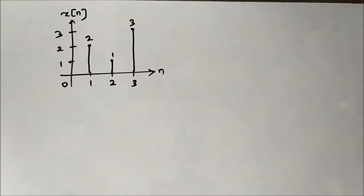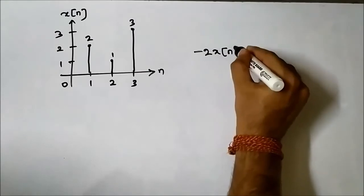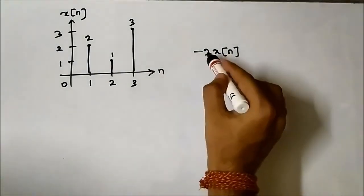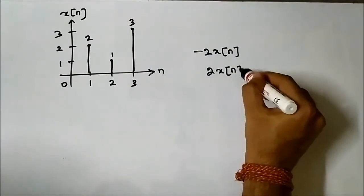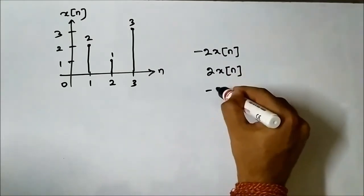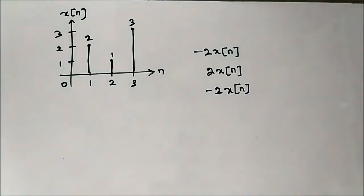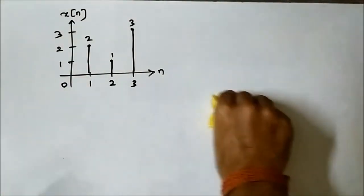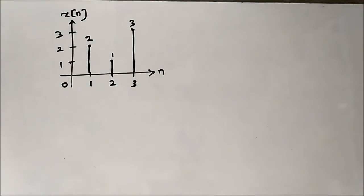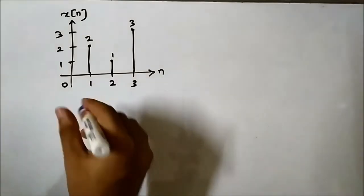Here we have a discrete time signal where we have to perform the operation -2x[n]. Here 2x[n] means amplitude scaling will occur with scaling factor 2, and then the negative sign in -2x[n] means it's a combination of both amplitude scaling and inversion. We can do it in two steps: first we will do 2x[n], then we'll do -2x[n]. In this first question, let us do it in steps.